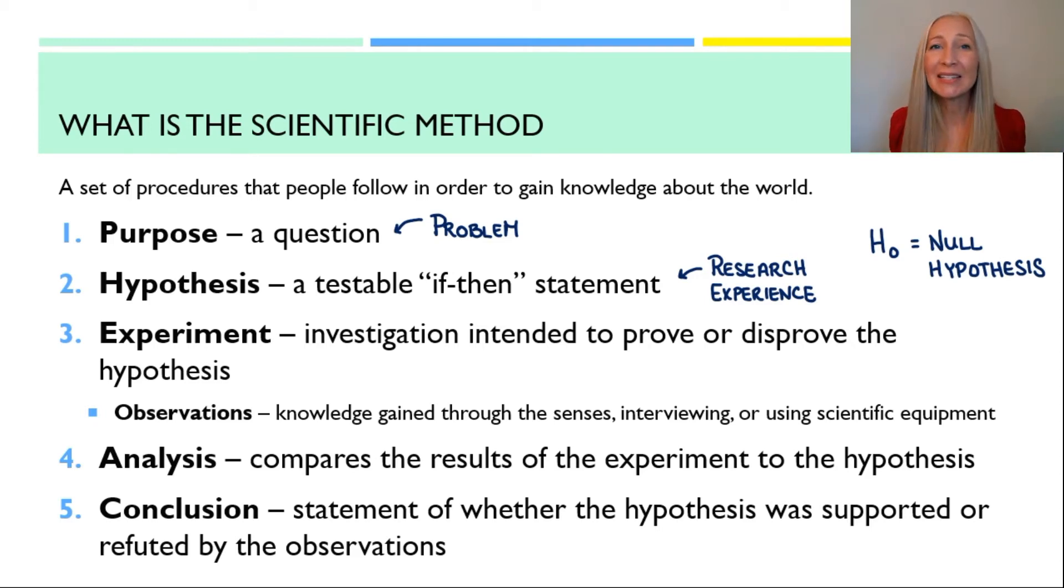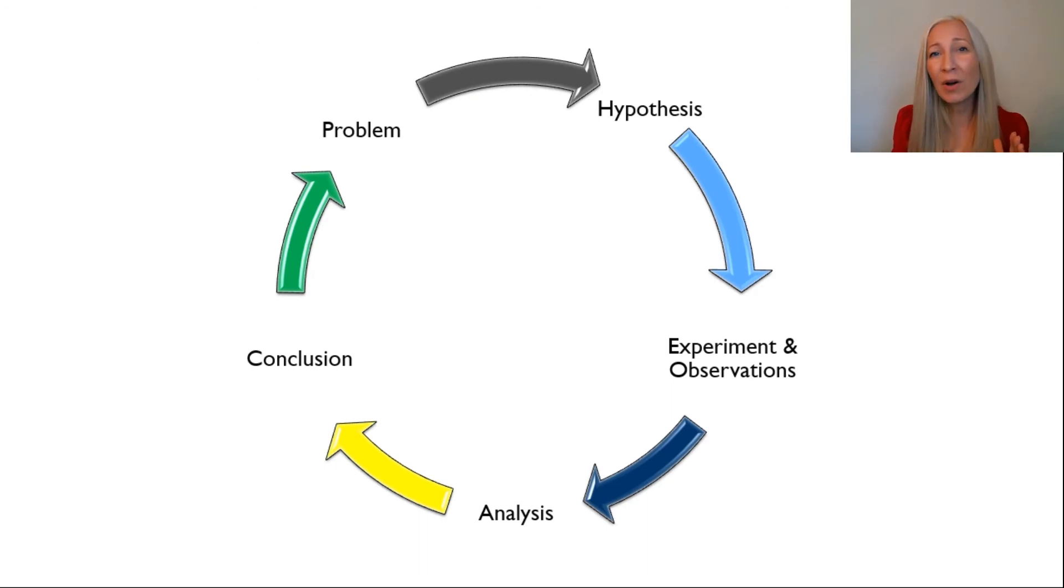Now, this looks all nice and clean and linear, but in reality, the scientific method is all about feedback loops and bouncing kind of from one portion of the scientific method to another.